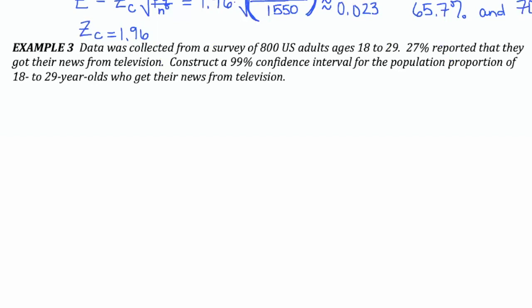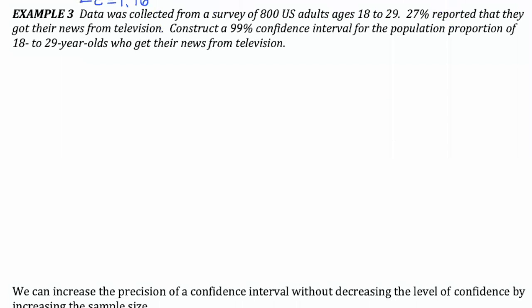All right, let's take a look at one more example. Data was collected from a survey of 800 U.S. adults ages 18 to 29. 27% reported that they got their news from TV. Construct a 99% confidence interval for the population proportion of 18 to 29 year olds who get their news from television.